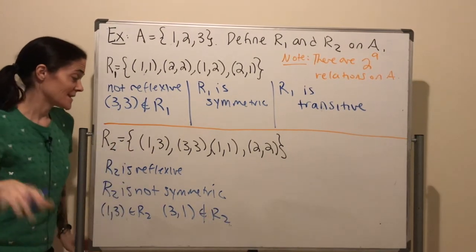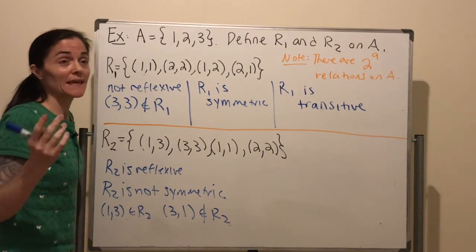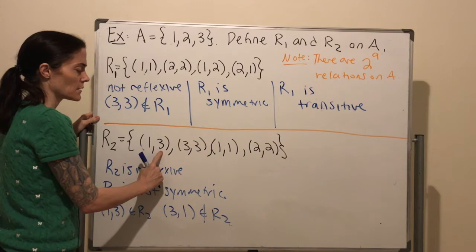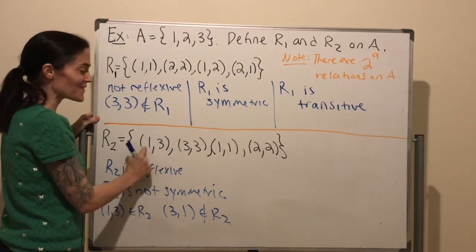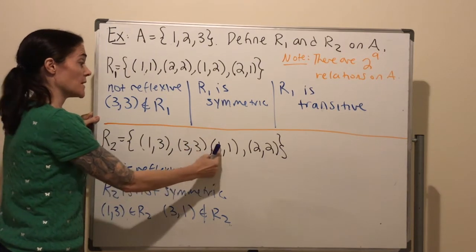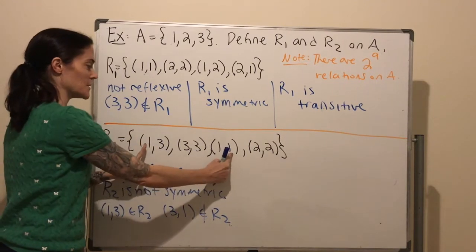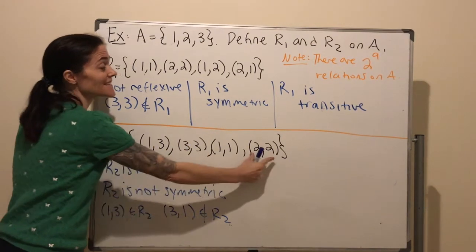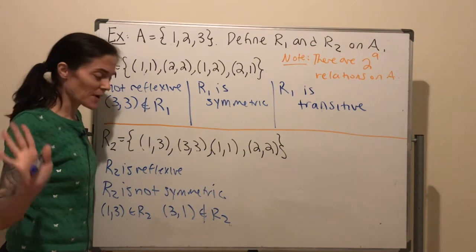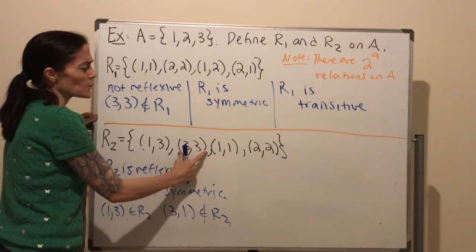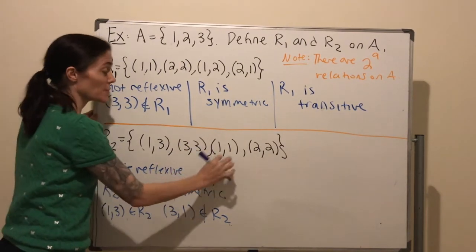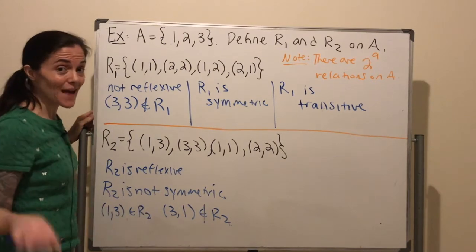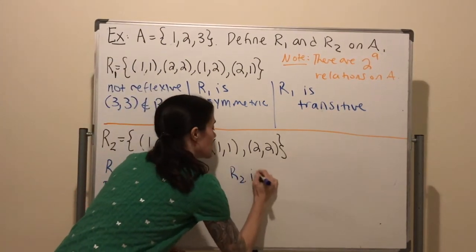So R2 is reflexive but not symmetric. Now let's think about transitive. We check ordered pairs where the middle ones match. For instance, (1, 3) and (3, 3) — middle ones match, we have (1, 3). Or (1, 1) and (1, 3) — middle ones match, we would need (1, 3), and we have it. The diagonal elements like (3, 3) and (3, 3) only need (3, 3), no problem. Similarly (1, 1) and (1, 1) — no problem. So R2 is transitive.